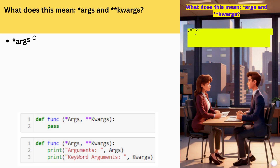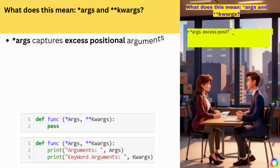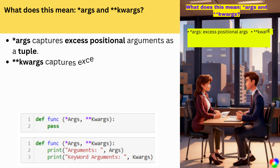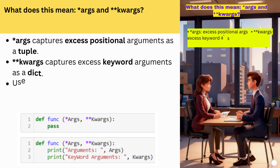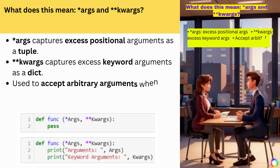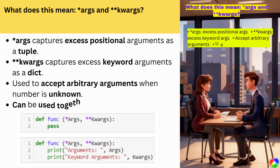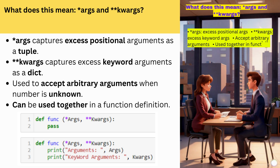What does *args and **kwargs mean? *args captures excess positional arguments as a tuple. **kwargs captures excess keyword arguments as a dict. Used to accept arbitrary arguments when the number is unknown. Can be used together in a function definition.